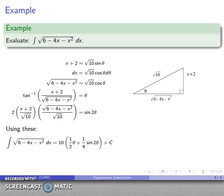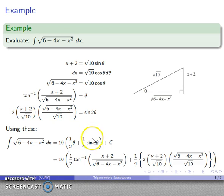And so now I can put everything back into place. And I have 1/2 θ, this thing. 1/4 sin 2θ, this thing. And don't forget my plus constant of integration, which unfortunately fell off the screen here.